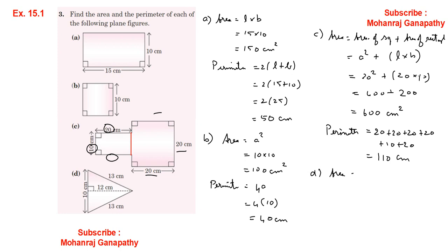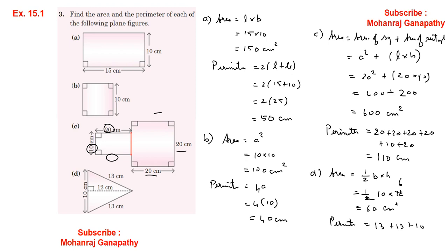For the right triangle: Area = ½ × base × height = ½ × 10 × 12 = 60 square centimeters. Perimeter = sum of three sides = 13 + 13 + 10 = 36 centimeters.